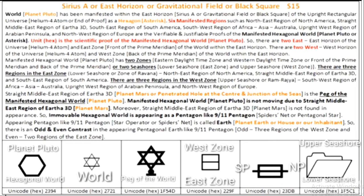The root of a tree is not found in appearance. Similarly, the peg of the manifested hexagonal world or Artha 3D is not found in appearance. So the manifested hexagonal world is appearing as a pentagonal earth like 9-11 Pentagon. The architect of 9-11 Pentagon is the historical dawn of two-in-one partnership between terrorism and activism, and the mastermind of 9-11 suicide game and current silent killing or bioterrorism.